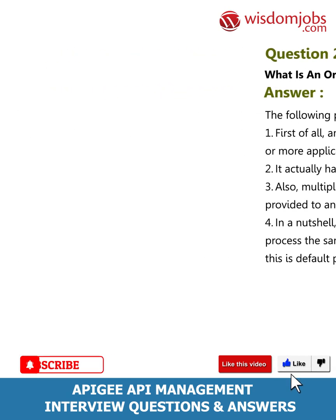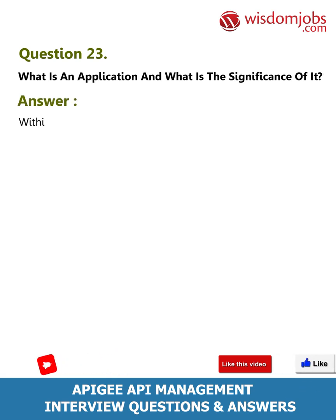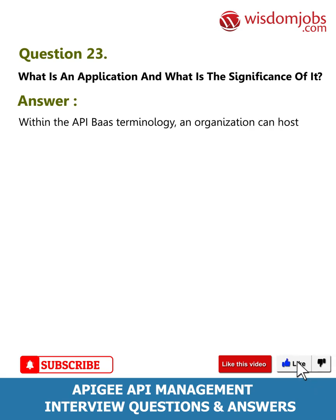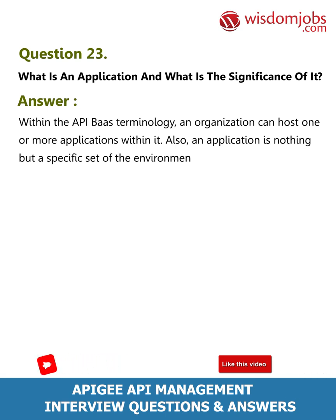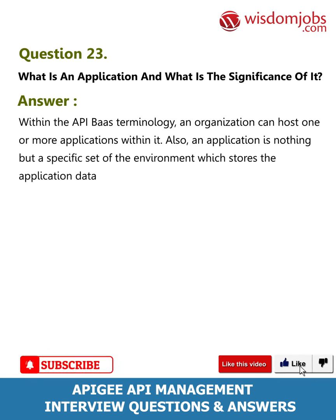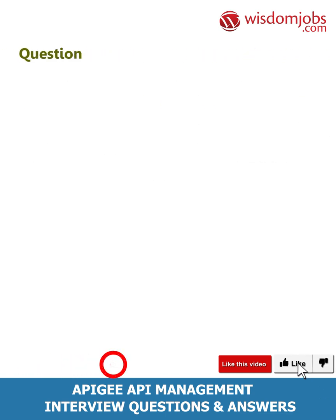Question 23: What is an application and what is the significance of it? Answer: Within the API BaaS terminology, an organization can host one or more applications. An application is a specific set of environment which stores the application data associated with the app.